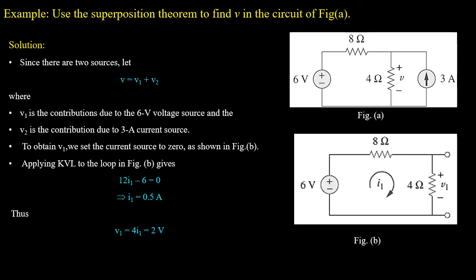Now look at the given example. You have to find the value of voltage V using the superposition method. The given circuit has two independent sources, so the output voltage V equals V1 plus V2, where V1 is the contribution due to the 6 volt voltage source and V2 is the contribution due to the 3 ampere current source. As step 1, to obtain V1 we set the current source to zero, which results in an open circuit as shown in figure B. As step 2, we find V1 using KVL.